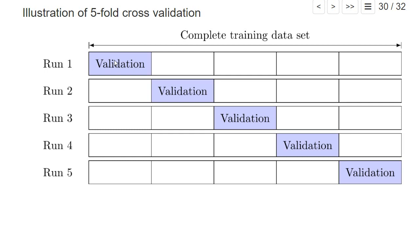It starts the same way as before, but now we have four more runs. We repeat the whole process, now using the second fifth of our training data set as the validation data set. We estimate our model on the remaining parts for each value of the hyperparameters and assess the out-of-sample prediction accuracy on this validation data set. We repeat this process using always one different fold — these five parts are called folds.